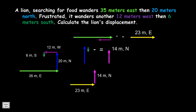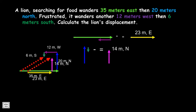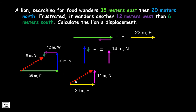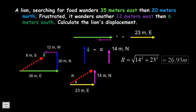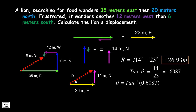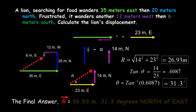Then we combine the two resultant vectors. They are perpendicular to each other, so we can use the Pythagorean theorem to get the final resultant vector R. The magnitude is 26.93 meters. Using the tangent trigonometric function, we can solve for angle theta, which is 31.3 degrees. Therefore, the final resultant vector R is 26.93 meters at 31.3 degrees north of east.